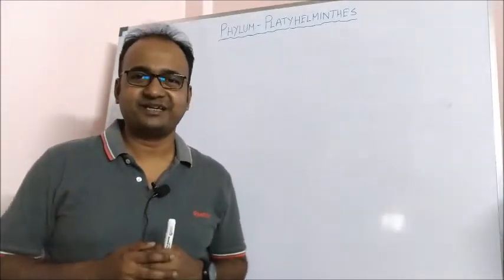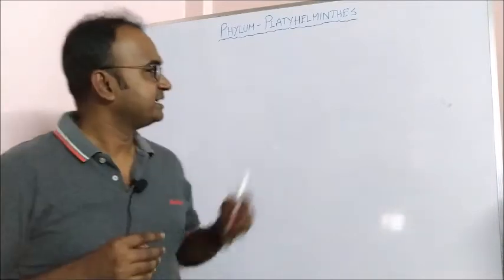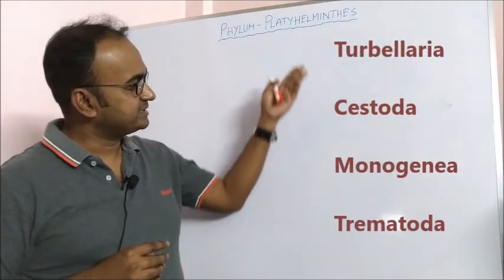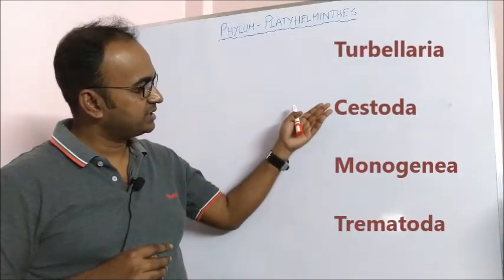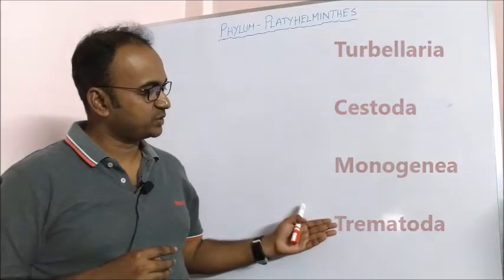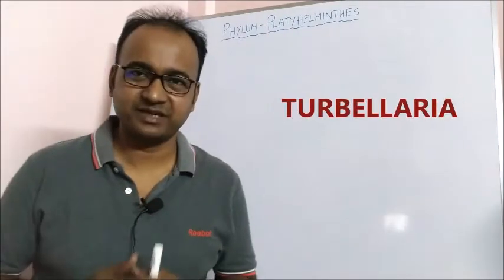Phylum Platyhelminthes is divided into four classes: Turbellaria, Cestoda, Monogenea, and Trematoda.